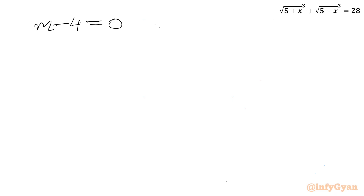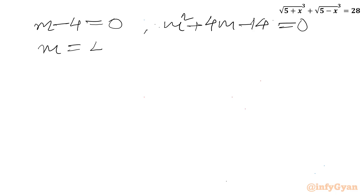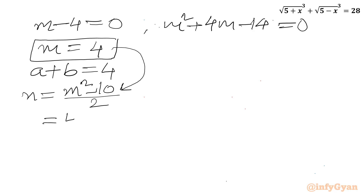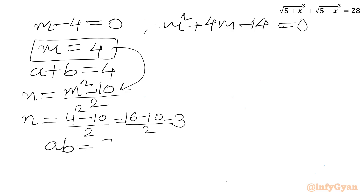So m minus 4 equals 0 or m squared plus 4m minus 14 equals 0. From the first equation m equals 4. Applying the quadratic formula to the second gives roots of minus 2 plus or minus 3 root 2, which are irrational.